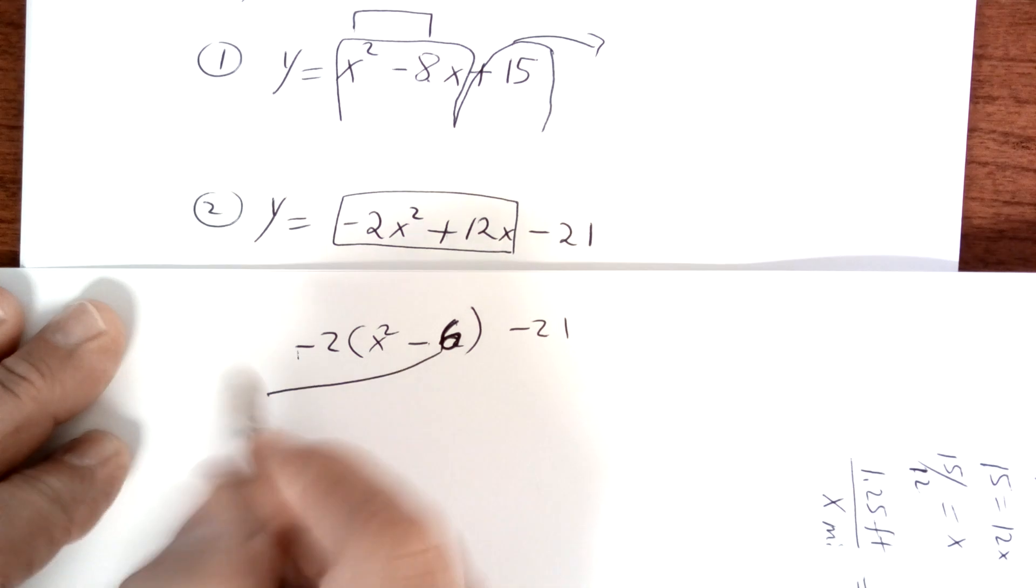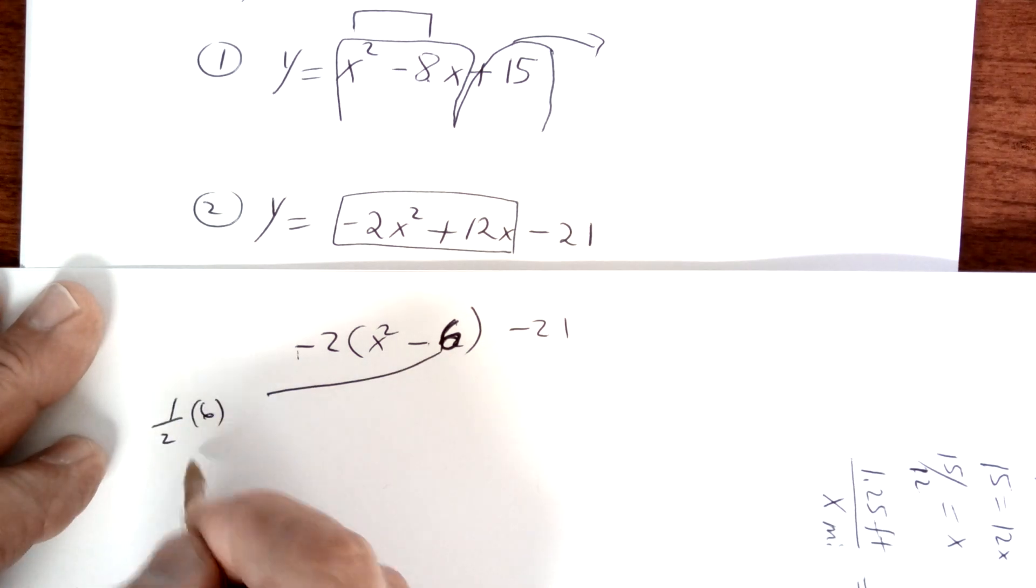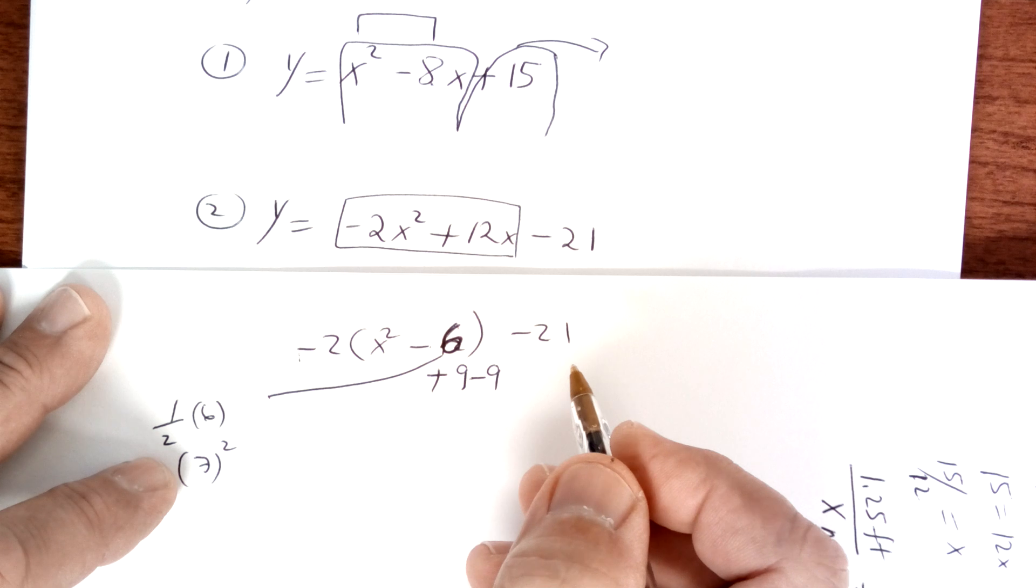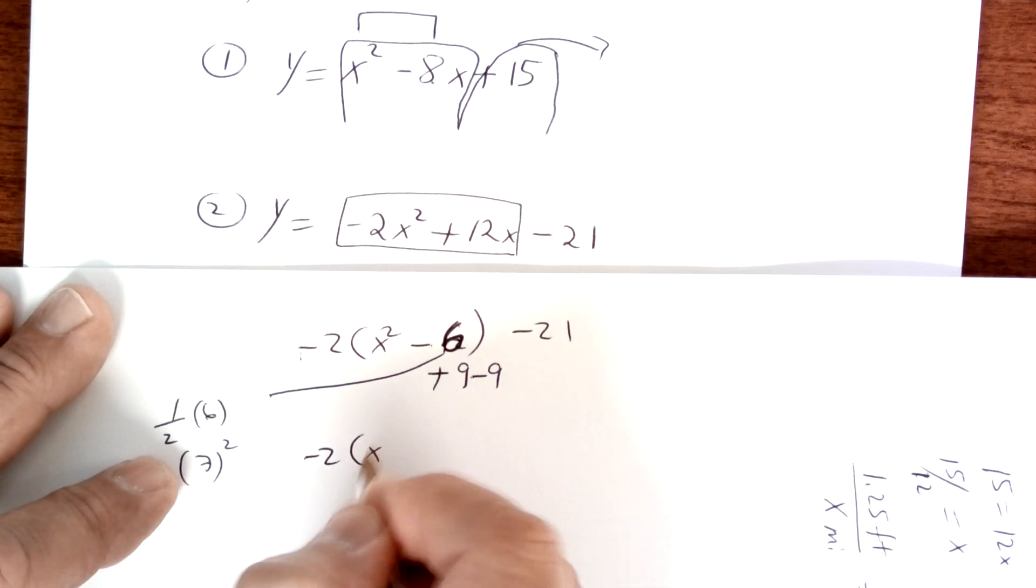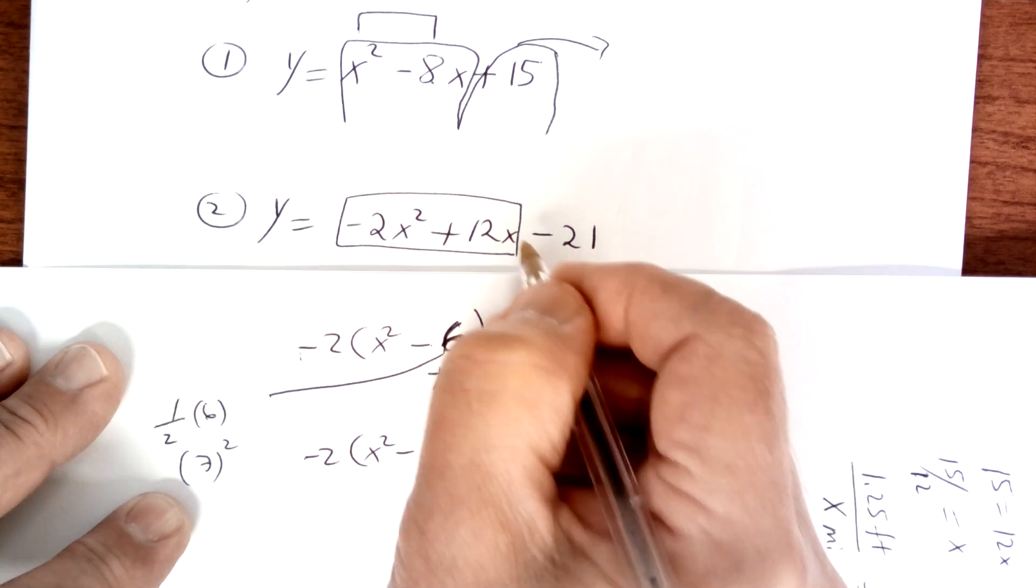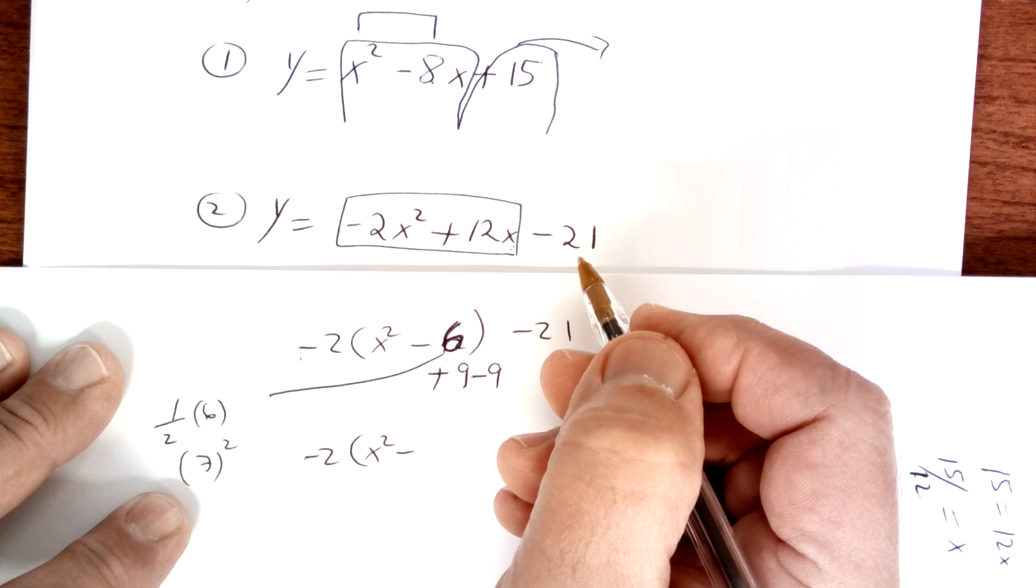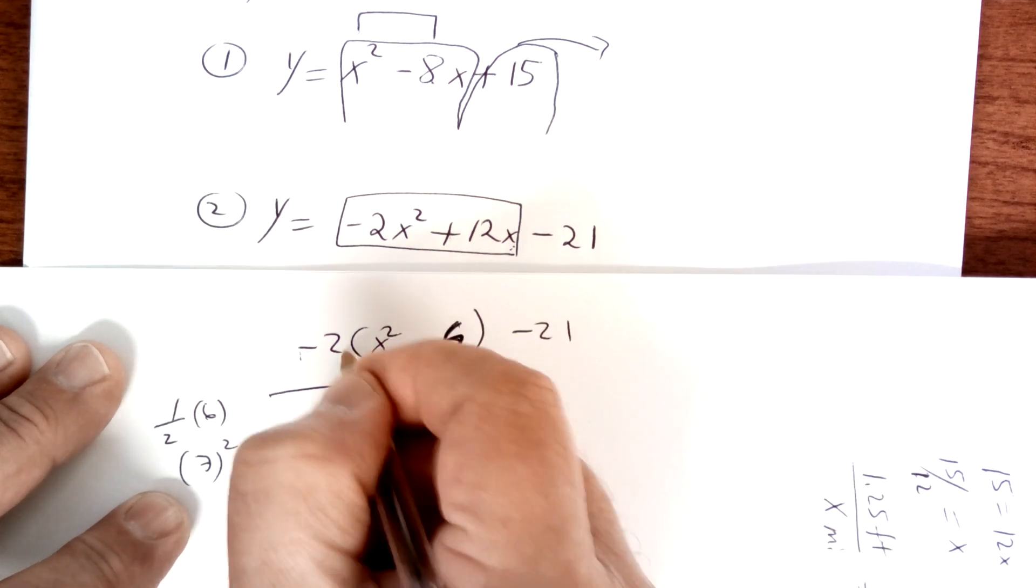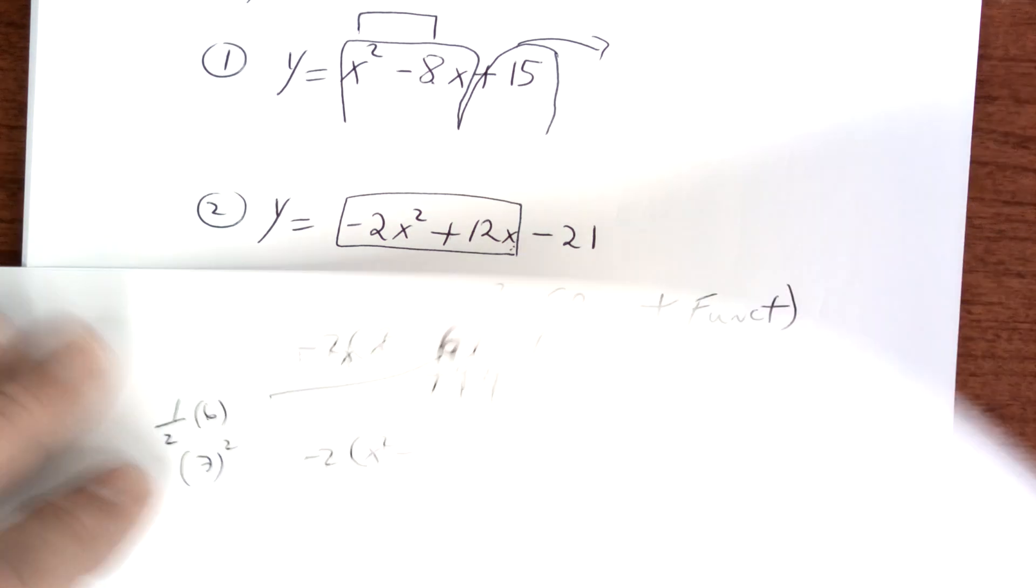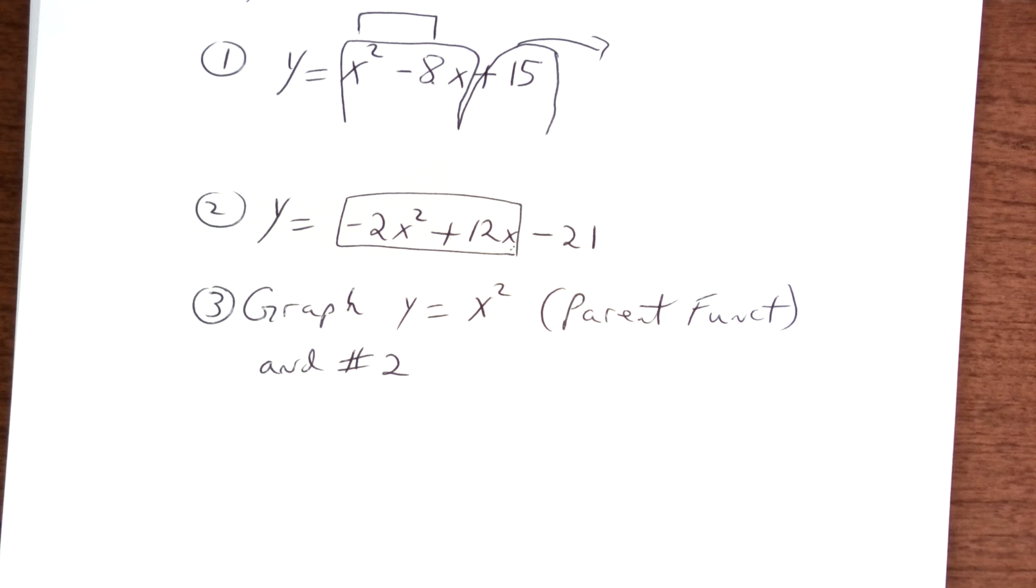So you're going to take half of 6, which is 3, and 3 squared is 9. So you're going to add 9 in here and subtract 9 in here. So what you have is a negative 2 times x squared minus 6. And this is technically we could factor an x out of that. So we'll talk about that one in class.